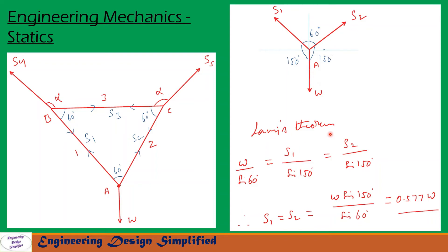Now let us apply Lami's theorem. Lami's theorem is W by sine 60 equal to S1 by sine 150. That is also equal to S2 by sine 150. So that is written here. So from this second and third term, we can see that denominator for this term and this term is same, that is sine 150. So S1 will be equal to S2. So S1 equal to S2 equal to W into sine 150 by sine 60. So after simplification, we get S1 equal to S2 equal to 0.577 into W.